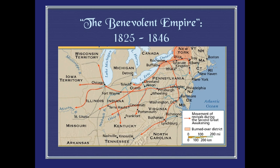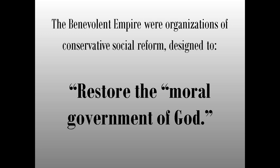The benevolent empire was inspired by evangelical Christian ideals and endorsed by upper middle-class men and women in the 1820s and 30s, designed to reform the problems thrust upon society by the Industrial Revolution. These were organizations of conservative social reform designed to restore the moral government of God — people were losing their faith and spirituality. They battled drunkenness, adultery, prostitution, and crime. Women were a large part of these organizations, setting up charitable institutions.